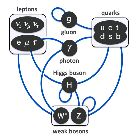At present, matter and energy are best understood in terms of the kinematics and interactions of elementary particles. Physics has reduced the laws governing the behavior and interaction of all known forms of matter and energy to a small set of fundamental laws and theories. A major goal of physics is to find the common ground that would unite all of these theories into one integrated theory of everything, of which all the other known laws would be special cases.